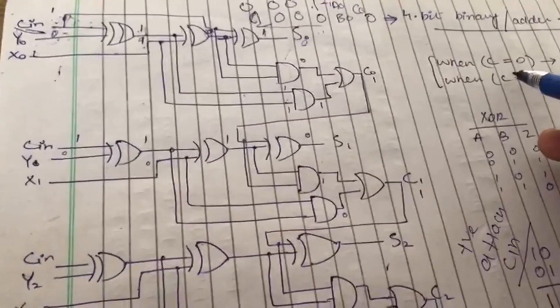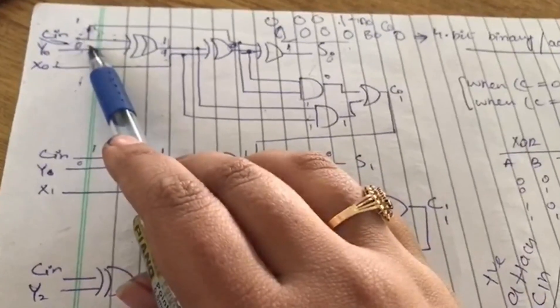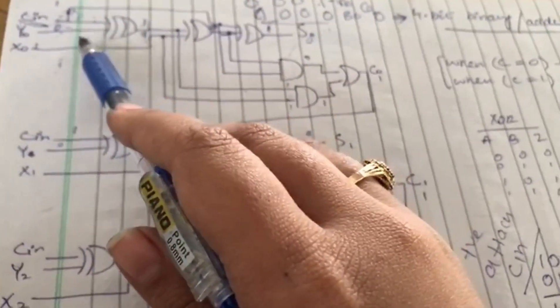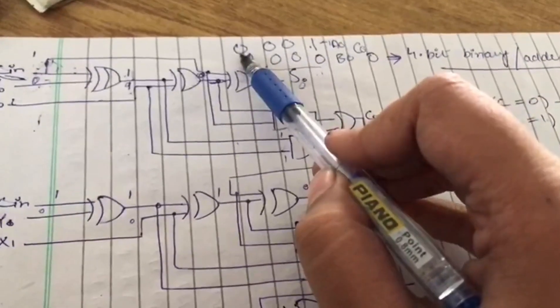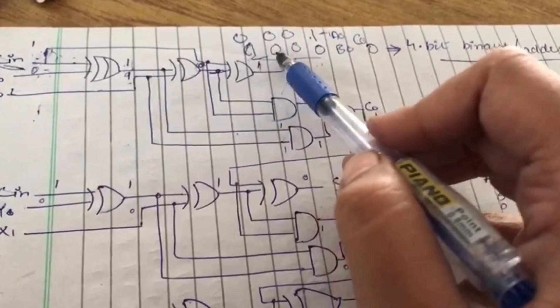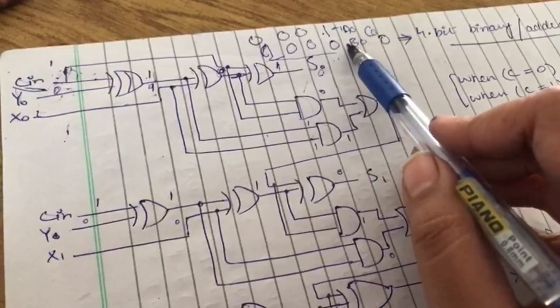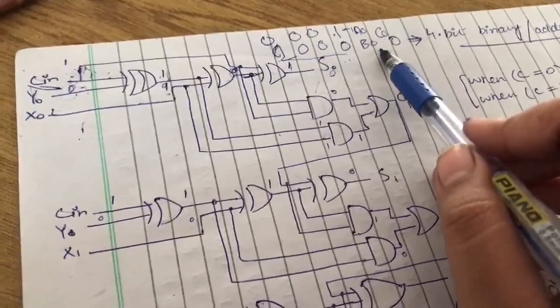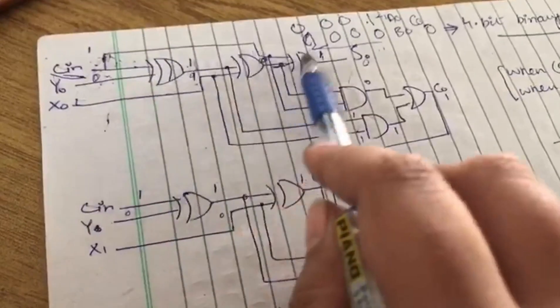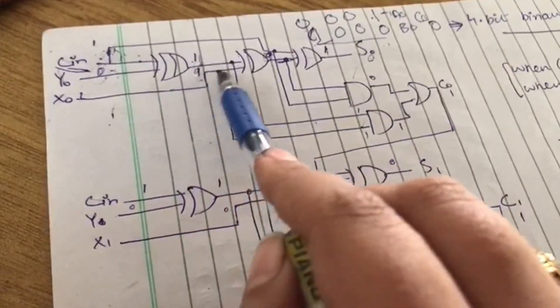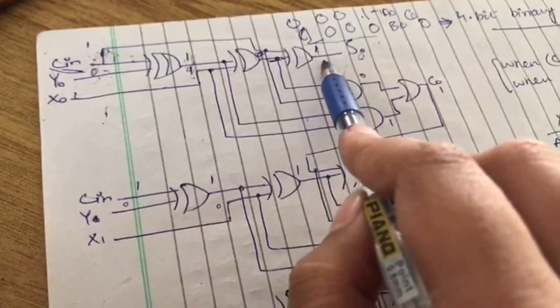Now let's take an example. We have A0 is 1, B0 is 0, and C in is 0. When we XOR these values: 0 XOR 0 gives 0, then 1 XOR 0 gives 1. For the carry generation, 1 AND 0 is 0, and 0 OR 0 is 0, so C out is 0.